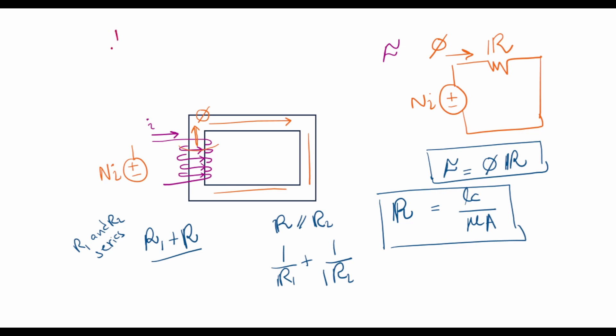There is also an analogy of 1 over R. So 1 over R in electrical circuits is called the conductance or G. In a similar way, 1 over R is called the permeance. And this expression can also be written in terms of the permeance. So flux is equal to permeance times the magnetomotive force. We will see that in some cases, this equation is easier to solve compared to this equation.